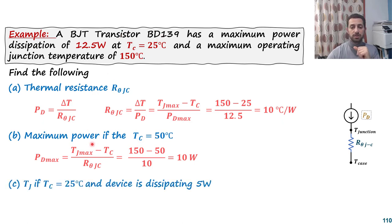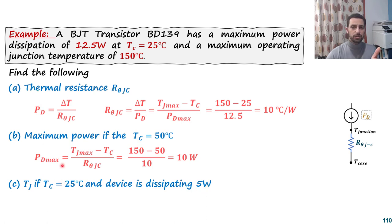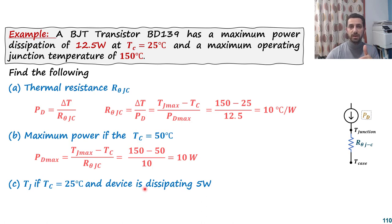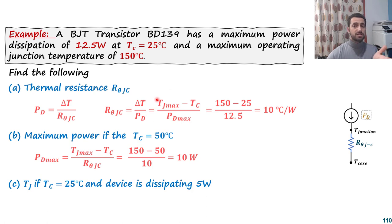Now, what is the junction temperature if the case is still at 25°C and the device is dissipating 5 watts? All of these can be calculated using the same thermal Ohm's law. The power dissipation is 5 W and I want to know the junction temperature. With T_case = 25°C and R_θJC = 10°C/W as the thermal resistance, and the junction temperature as the unknown.